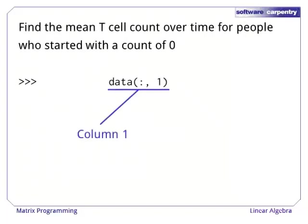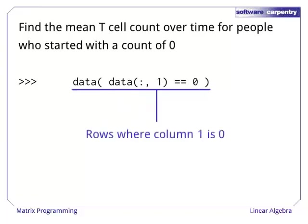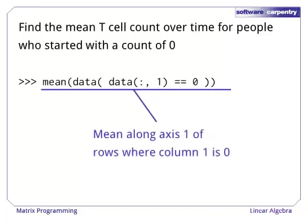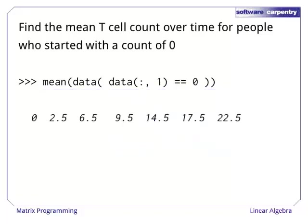Now let's find the mean T-cell count over time for those people. We start by selecting column 1 and testing it to create a Boolean mask. Using that mask as a subscript gives us the rows that have 0 in the first place. We can now use the mean function along axis 1, i.e. across all patients, which gives us the average behavior of patients who started with no responsive T-cells at all.